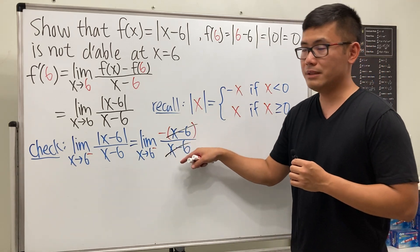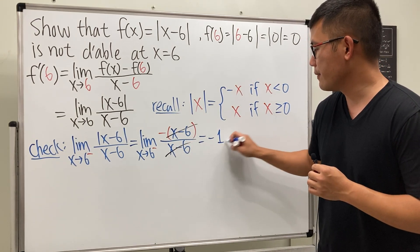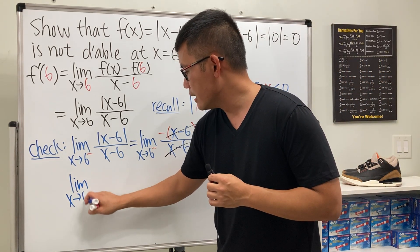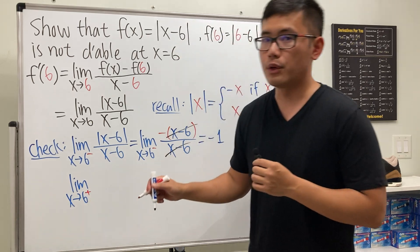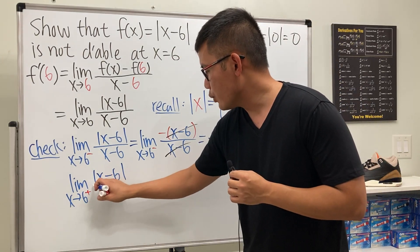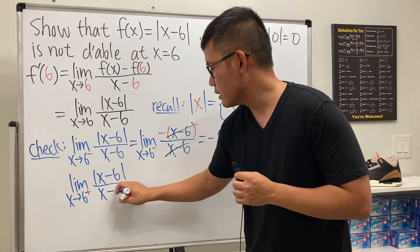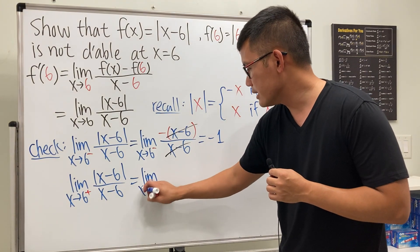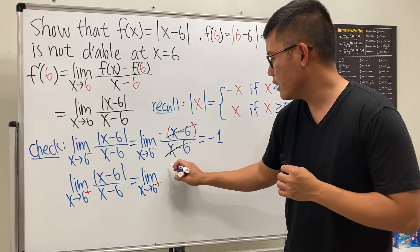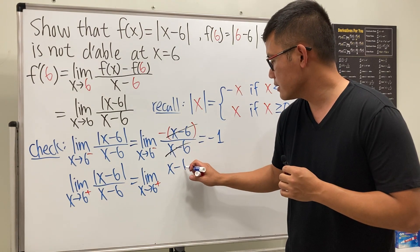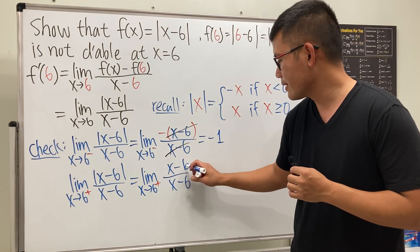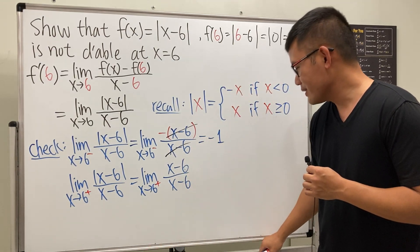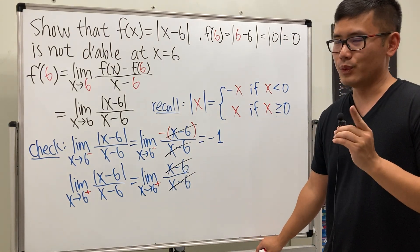We can cancel the (x minus 6) terms, so this limit gives us negative 1. On the other hand, for the limit as x approaches 6 from the positive direction, the input is positive, so we can just remove the absolute value. This becomes the limit as x approaches 6 from the right of (x minus 6) over (x minus 6).